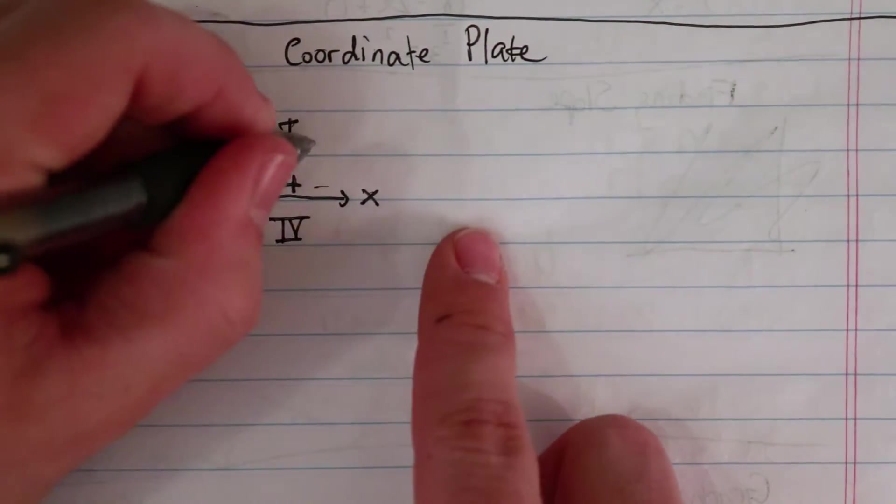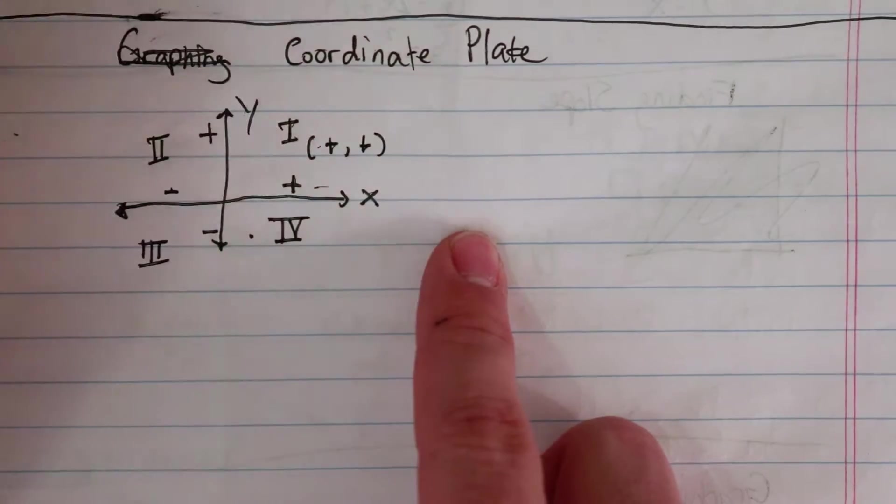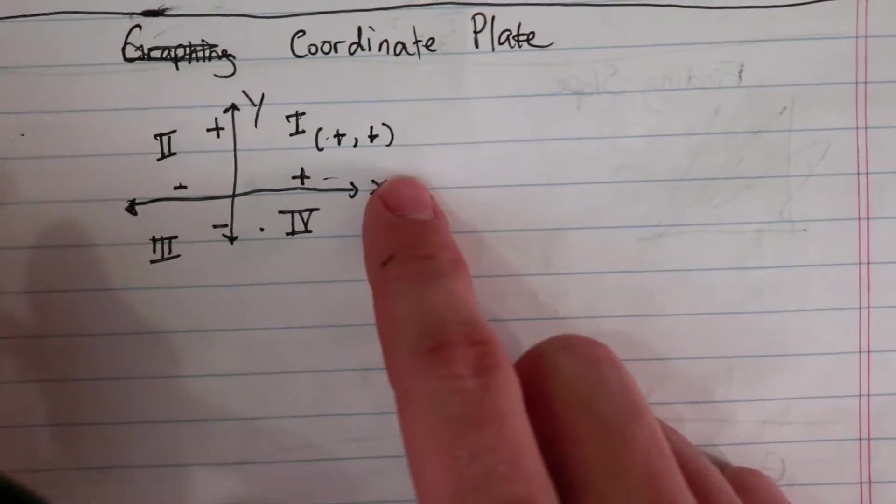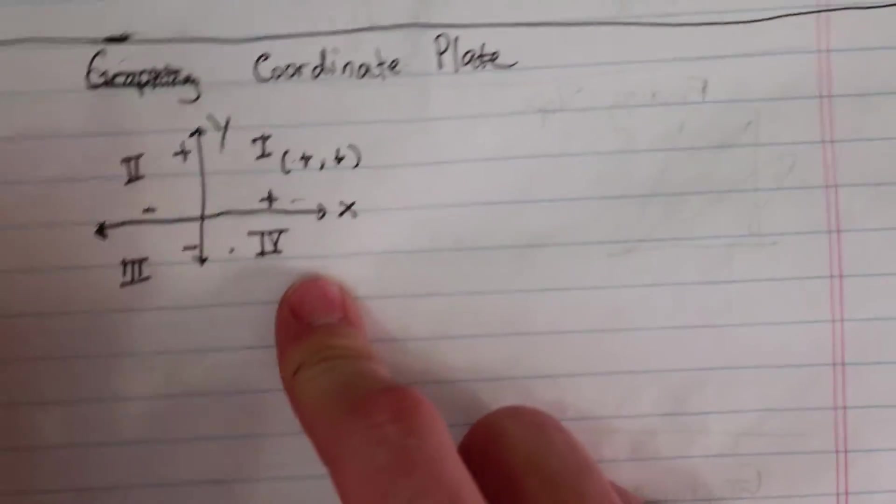And then in quadrant one, all of your points are going to have two positive signs. So if you have a coordinate point, and both numbers are positive, you know it's in quadrant one.